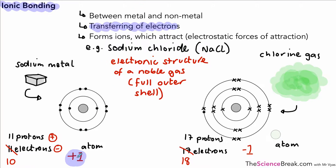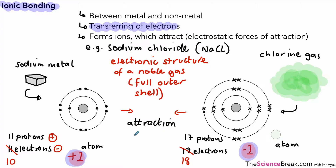That means they both have electrostatic forces of attraction. They have opposite charges which attract each other, and this is where we get our ionic bond — the attraction between the sodium ion and the chloride ion, giving us our bond.